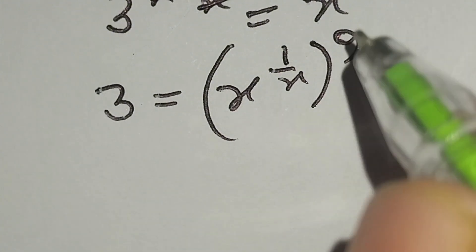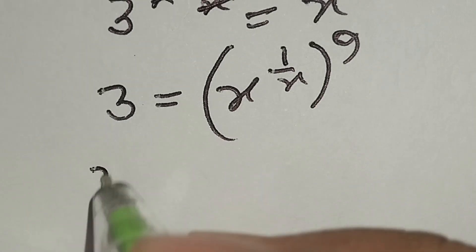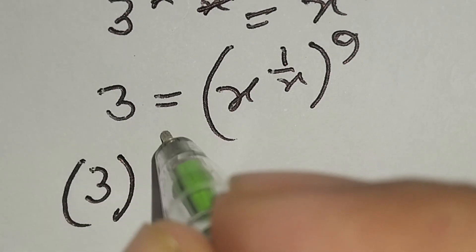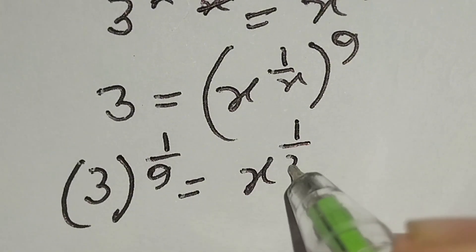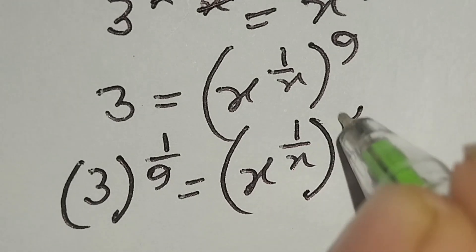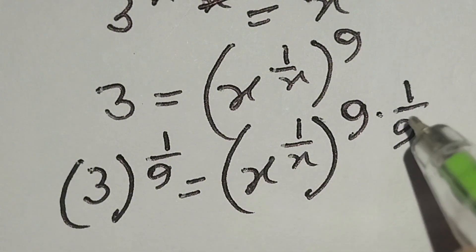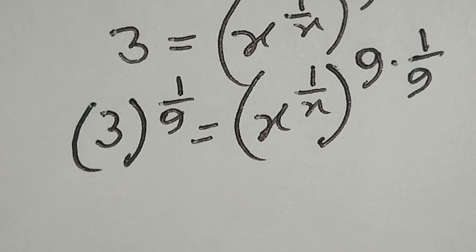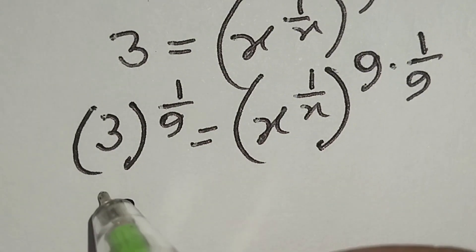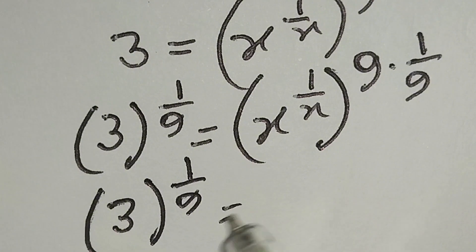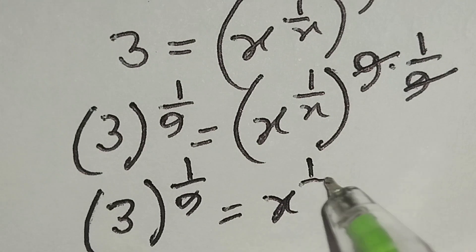To cancel out this 9, we can raise both sides to the power 1 over 9. So we can write 3 to the power 1 over 9 is equal to x to the power 1 over x, whole power 9 times 1 over 9. We have multiplied both sides by the power 1 over 9. Here, 3 to the power 1 over 9 is equal to x to the power 1 over x, since the 9 and 1 over 9 cancel out.